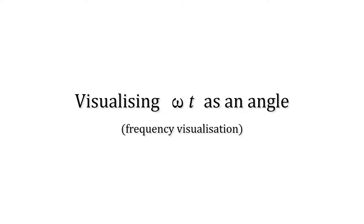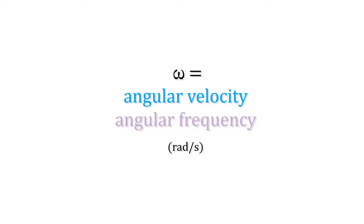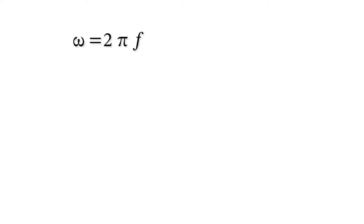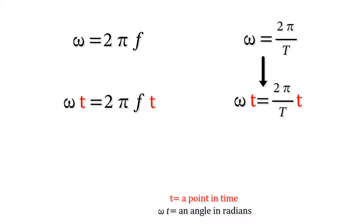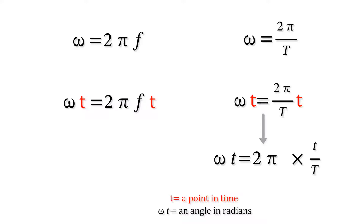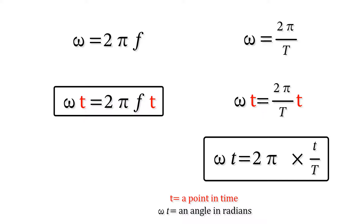Visualizing omega t as an angle — there are two ways to think about this. Omega is the angular velocity or angular frequency; it's how fast our circle is spinning. It equals 2 pi f, but because the frequency is 1 divided by the period, it's also equal to 2 pi divided by the period T. So omega t on the left is 2 pi f t, where t is a point in time and omega t is an angle. On the right hand side, omega t is 2 pi over the period times t, giving us 2 pi times the point in time divided by the period.